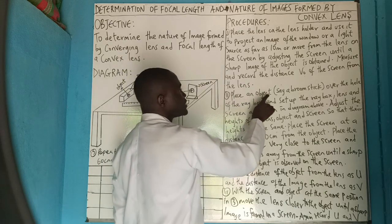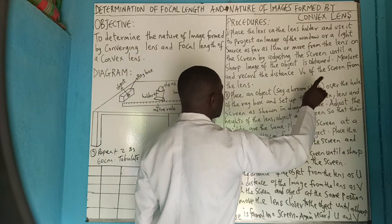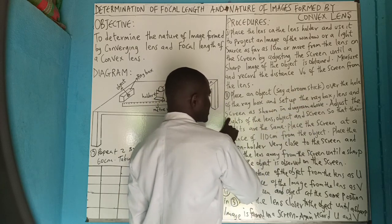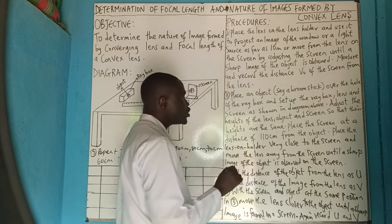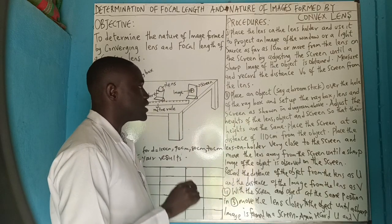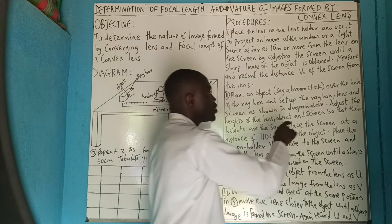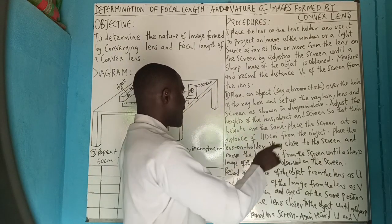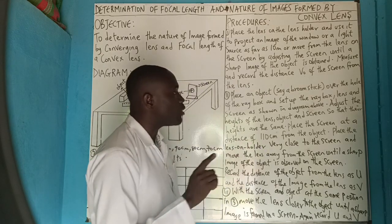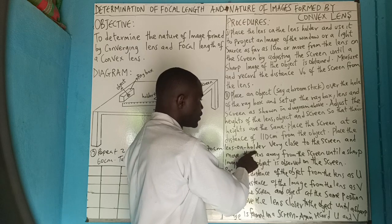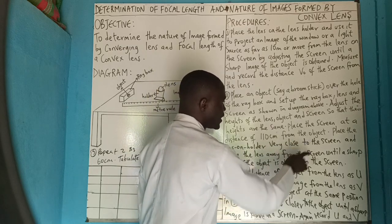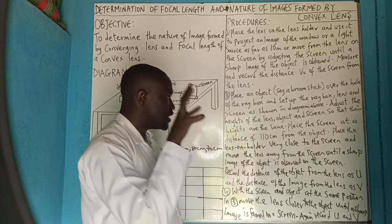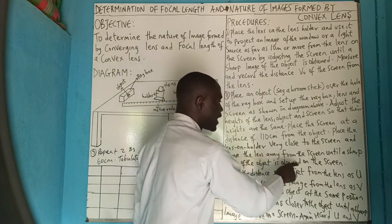Place an object — a broomstick — over the hole of the ray box, and set up the ray box, lens, and screen as shown in the diagram above. Adjust the height of the lens, object, and screen so that their heights are the same. Place the screen at a distance of 110 cm from the object. Place the lens on the holder very close to the screen and move the lens away from the screen until a sharp image of the object is observed on the screen.